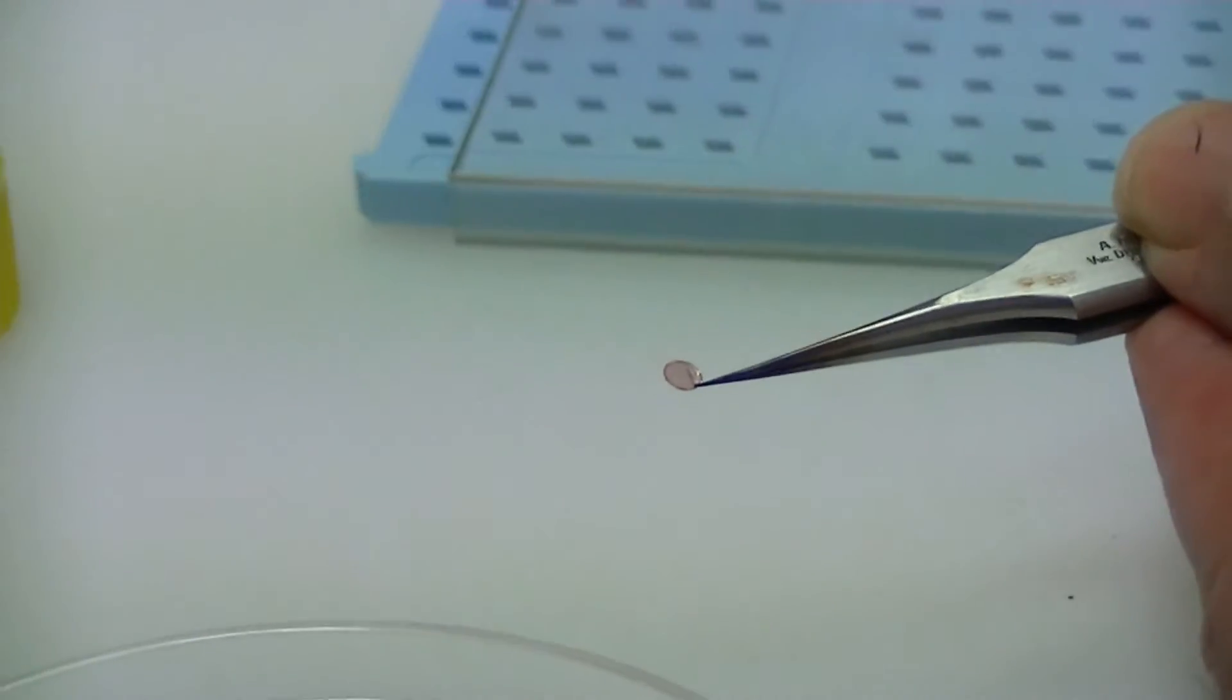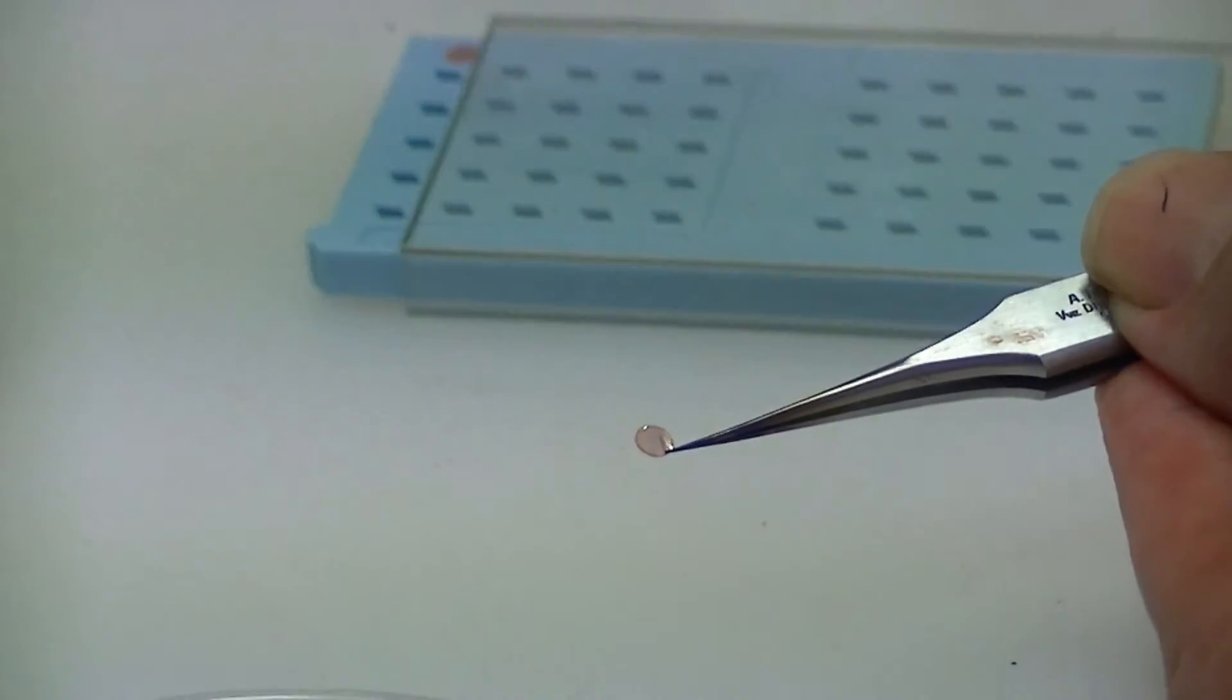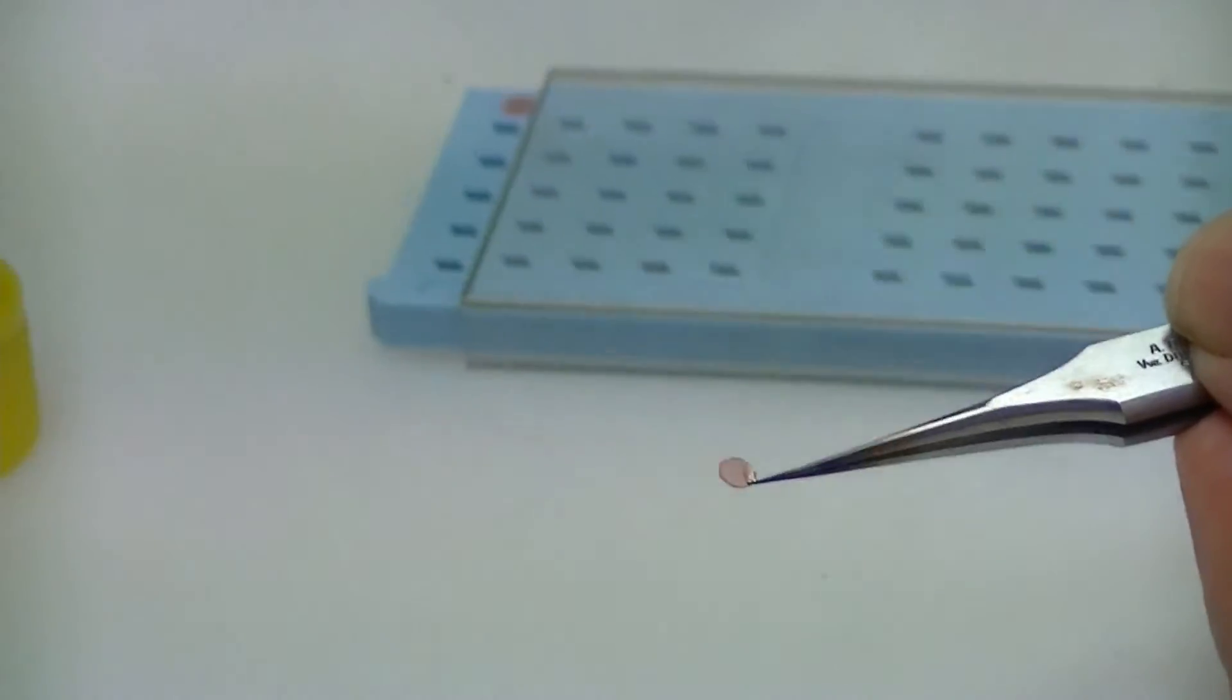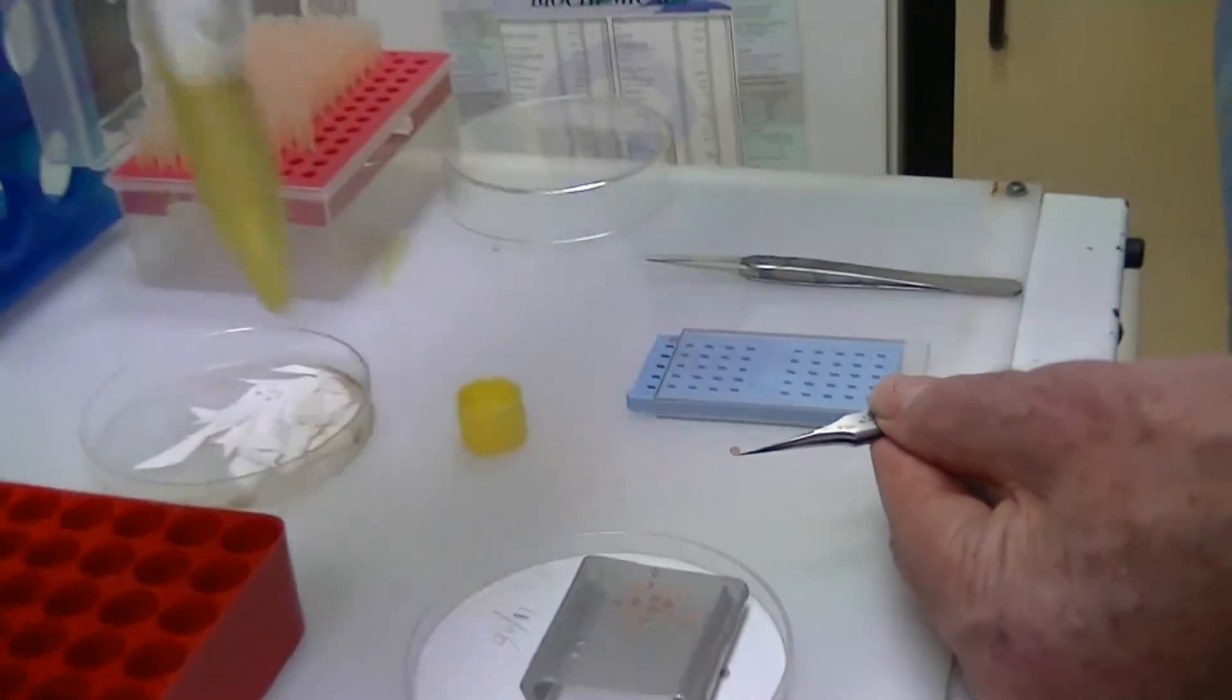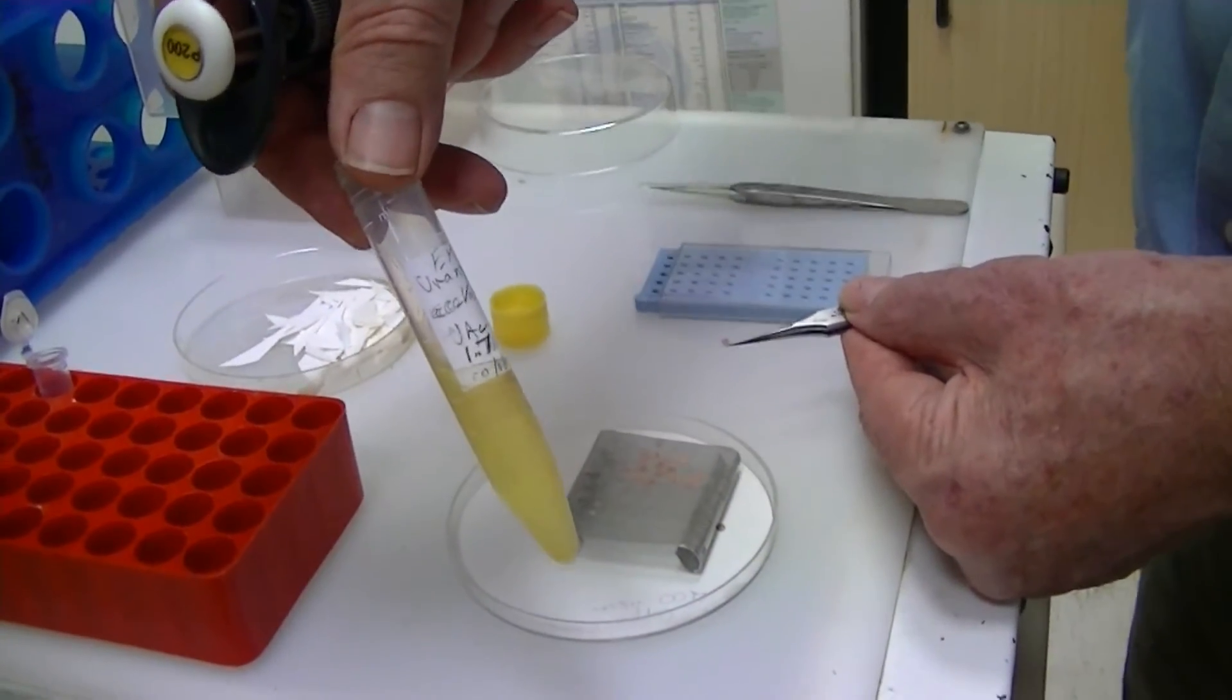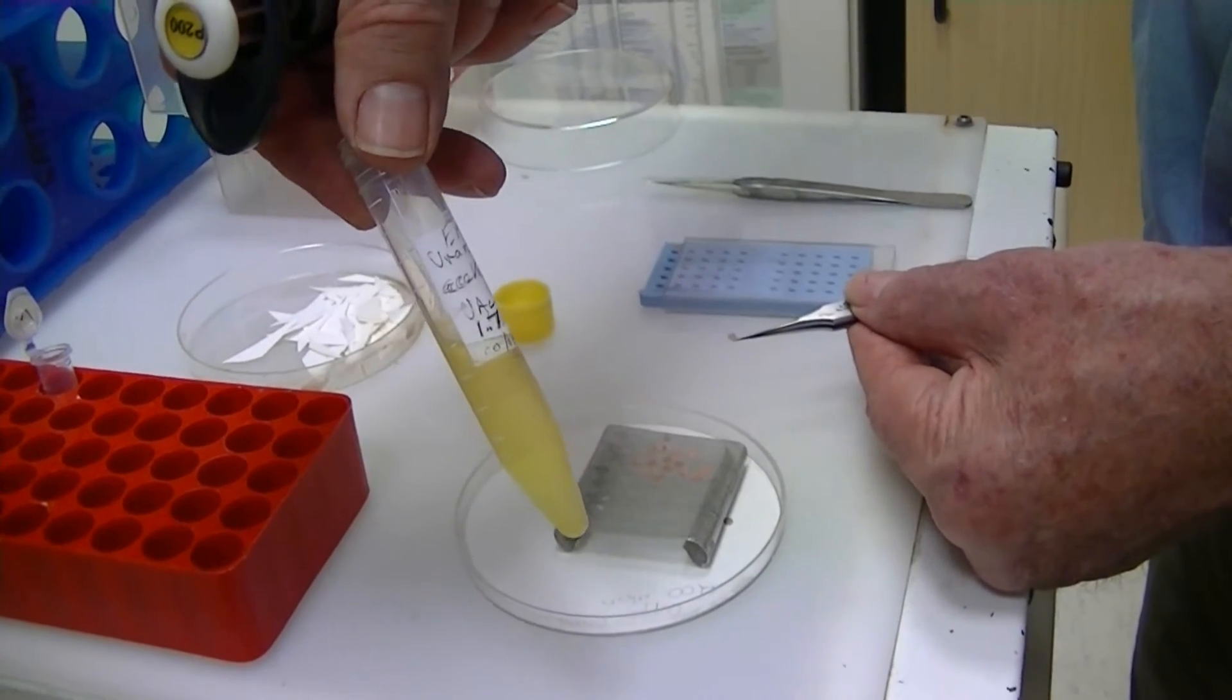Now to actually see the particles, we have to stain them with a negative stain. This is an example of one of our negative stains - uranyl acetate, around 2% in concentration.